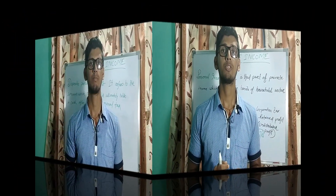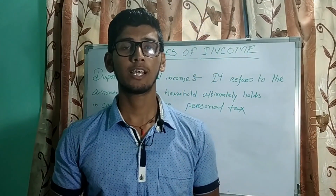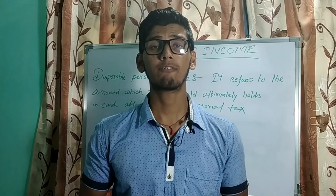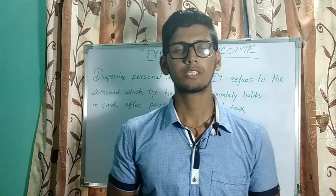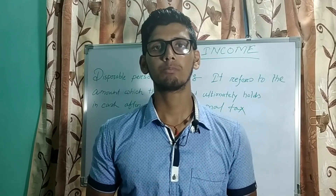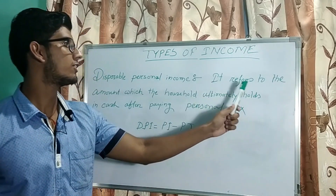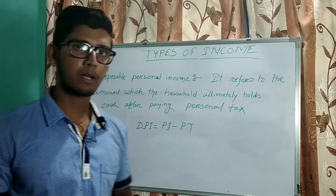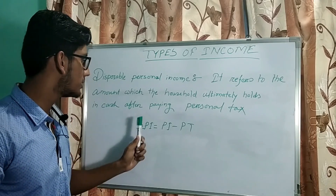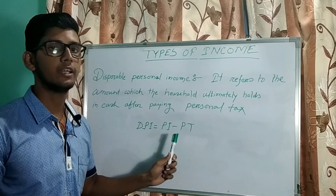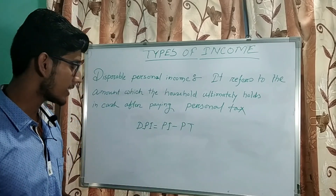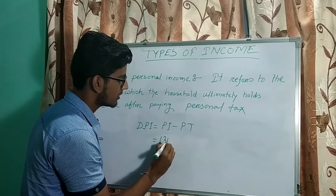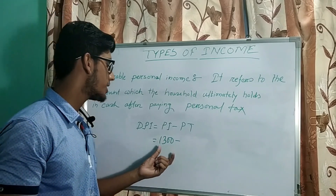Now let us understand personal disposable income. This is the ultimate amount of money that the household sector holds after paying all kinds of taxes to the government, and it can be used for consumption purposes. It refers to the amount which the household ultimately holds after paying personal taxes. The formula is: DPI equals Personal Income minus Personal Tax (PT). From our previous example, personal income was Rs. 1300. Let us say personal tax is 10% of personal income, that is Rs. 130.